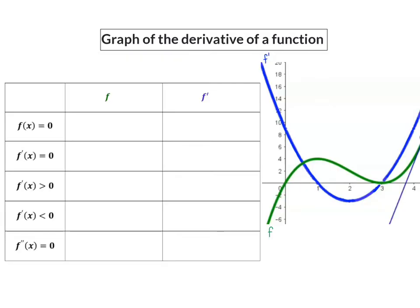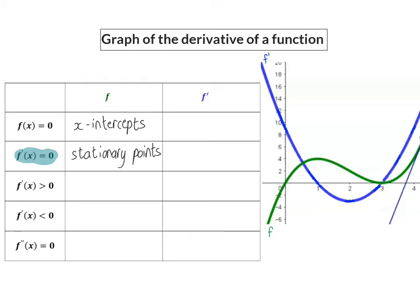So let's have a look at what different calculations tell us about these two graphs. If we look at the calculation f(x) = 0, we know that that is where for the green curve we calculate the x-intercepts. This calculation however doesn't tell us anything about the derivative. The next calculation we can do is to determine the derivative and put it equal to 0. This will give us the x values of the stationary points or turning points of our green function, and because it is the blue function that we are putting equal to 0, we are calculating the derivative function's x-intercepts.